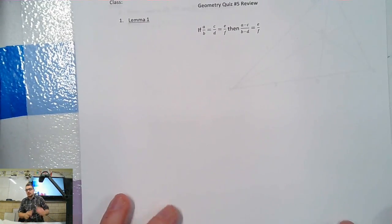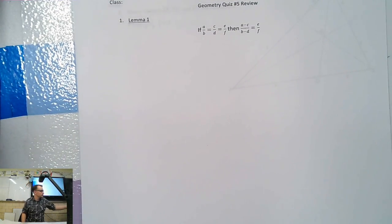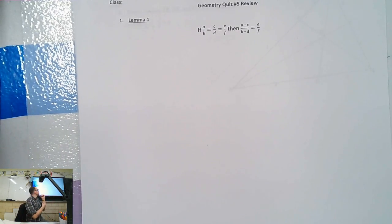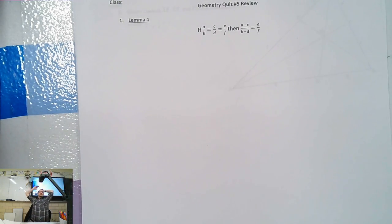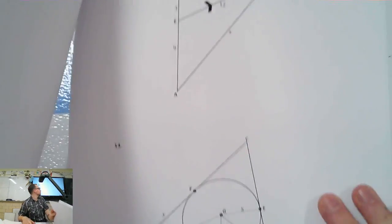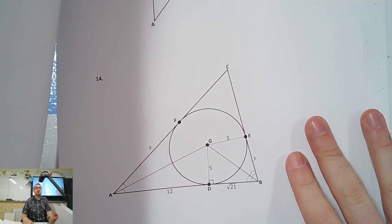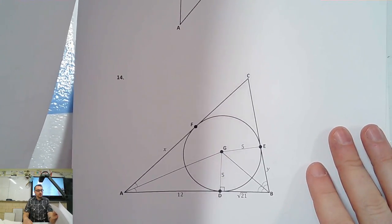All right, does everybody have a review packet? Okay, so here is the deal. We're not going to get through all of it. We're going to do as much as we can. The ones in the back look really awful, but they're actually way easier than they look because they're just numbers, not proofs. So if you know stuff about things, you'll be good to go.